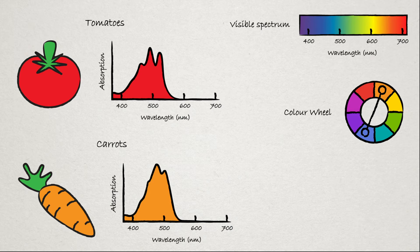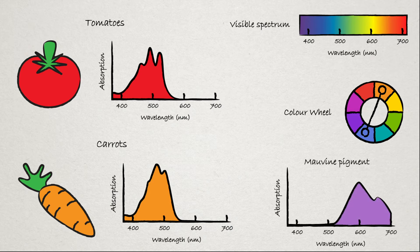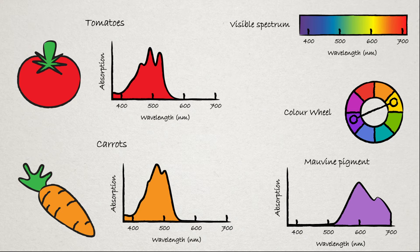We can also see this trend in other objects. Take this purple pigment — it mainly reflects blues and purples. It has a smidge of green and red, but it looks purple because it absorbs a lot of yellow light, and yellow is complementary to purple. The color of an object can be quite complicated, but it basically boils down to two things: what are the colors reflected from the object, and what are the complementary colors that are absorbed? But why do these things have this spectrum in the first place?